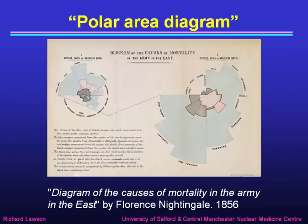Here's an example of what she called a polar area diagram, a forerunner of our pie chart. Here she's showing the causes of mortality in the army in the east in 1856, where each sector represents a different month, and the size of the sector the number of soldiers killed during that month.